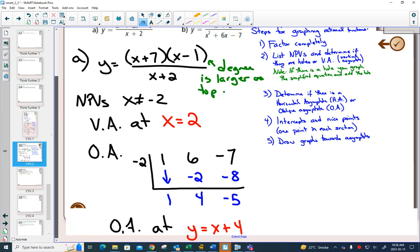So again, once you've found both of your asymptotes, or all of your asymptotes, you can start graphing. We know that we have a vertical asymptote at x equals 2, and now we have an oblique asymptote.